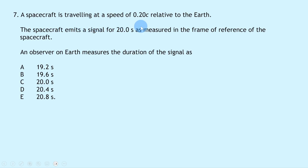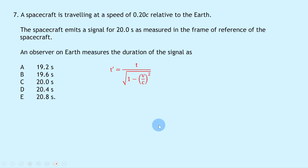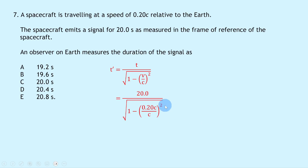Question 7 says a spacecraft travels at 0.20c relative to Earth. It emits a signal for 20.0 seconds in the spacecraft's frame of reference. An observer on Earth measures the duration. This is a time dilation question: t' = t / √(1 − (v/c)²). The proper time t = 20.0 s is measured in the spacecraft's frame. Substituting: t' = 20.0 / √(1 − 0.20²) = 20.4 seconds, which is option D.